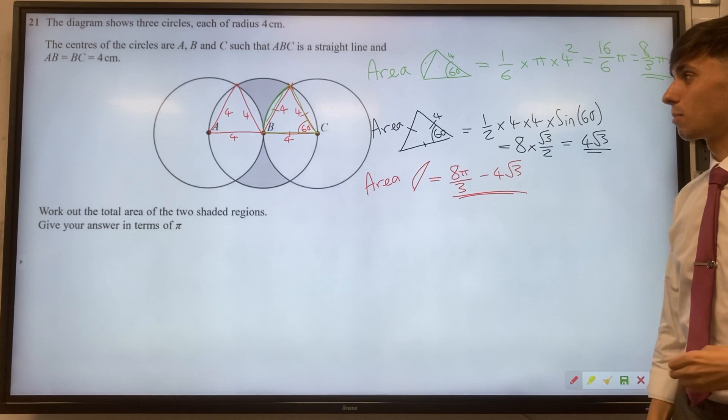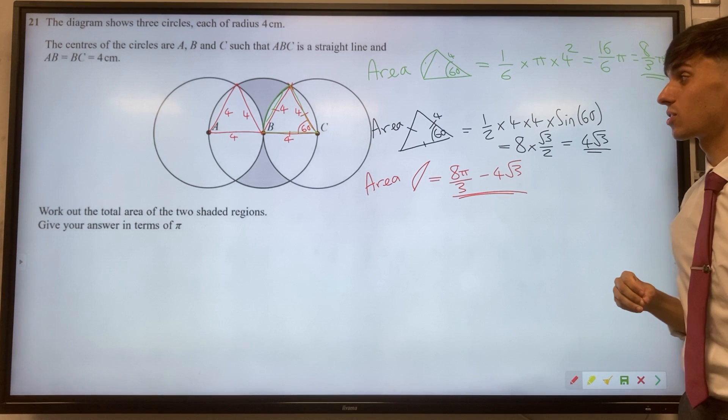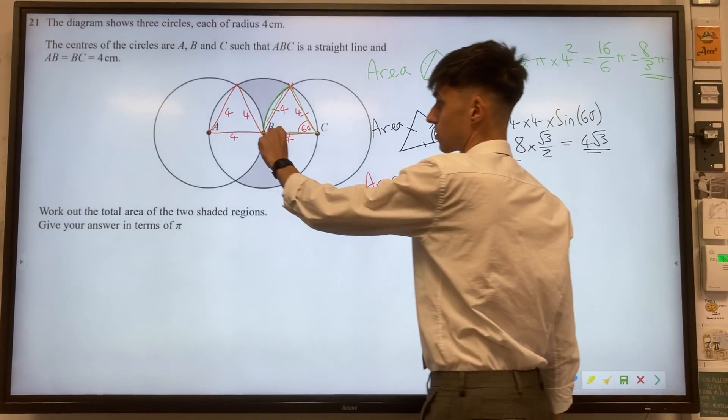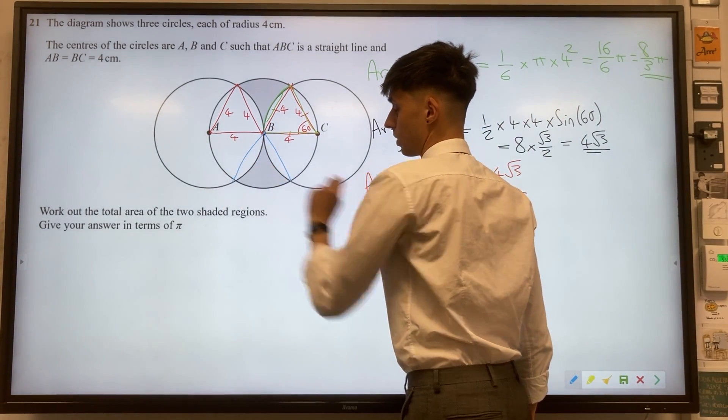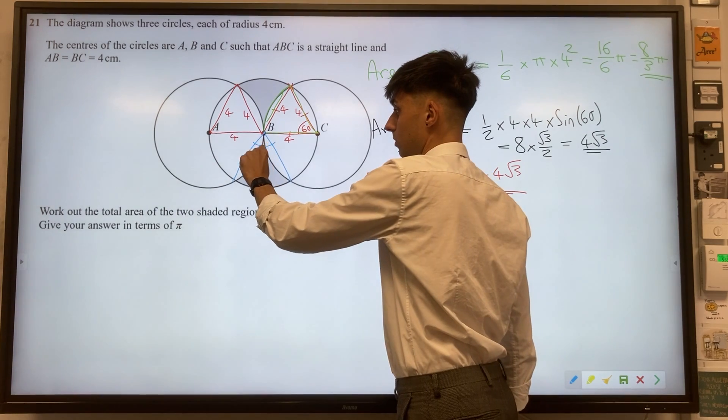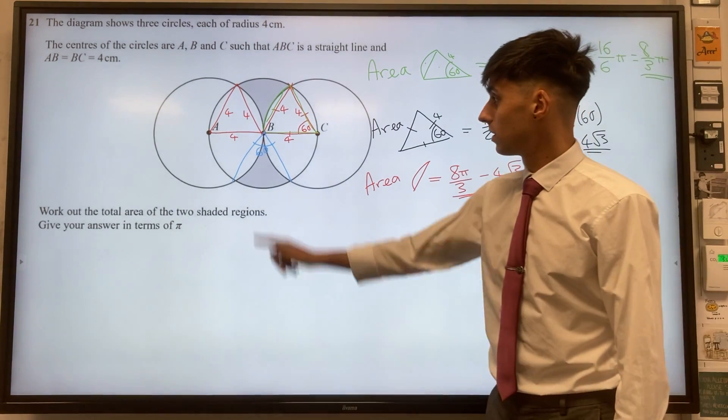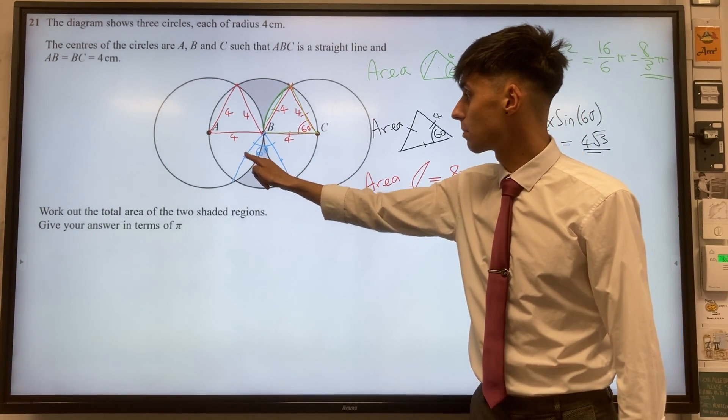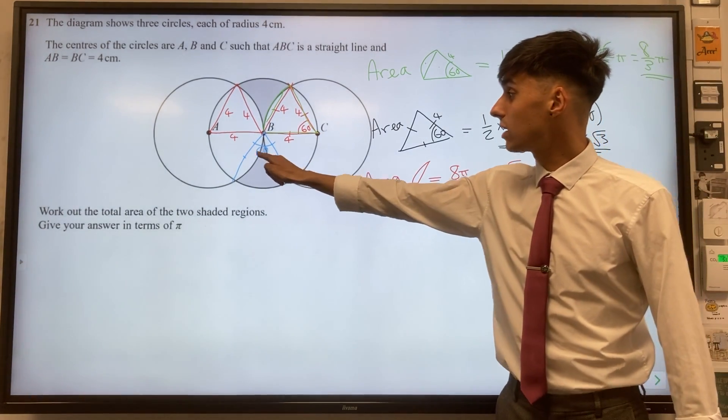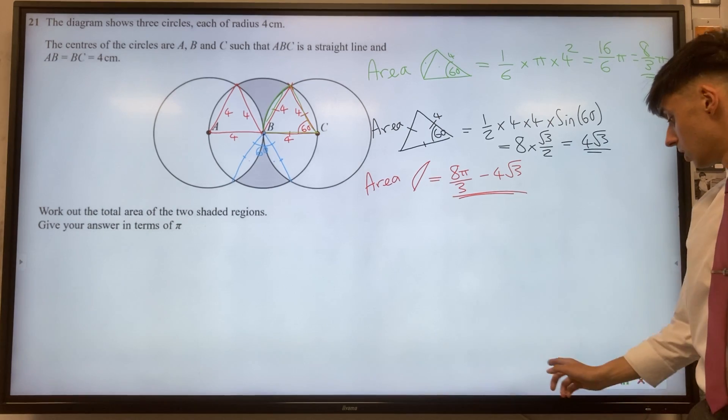It might seem like quite a lot of labor, but these shapes help us make up the shaded regions. One of these shaded regions is a sector with angle 60 (because it was made up of equilateral triangles). We need to take away two of our pizza crust segments to be left with a shaded area. Let's make a note of that.